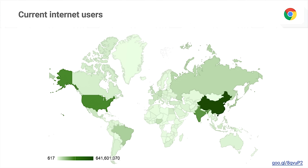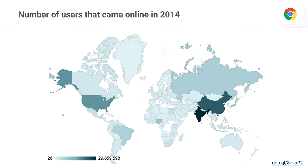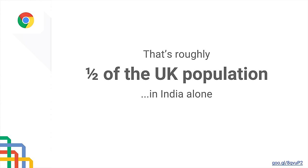And what's more interesting is where the growth is actually happening. This is a similar map looking at users that came online in 2014. In the United States, we had about 17 million internet users come online for the first time. But in India, we had 30 million internet users coming online for the very first time just in 2014. To put that into perspective, 30 million is about half of the population of the United Kingdom — coming online in India alone in just 2014.